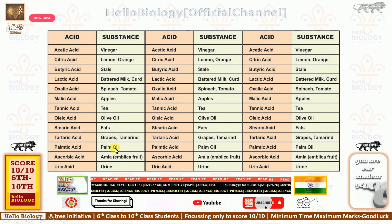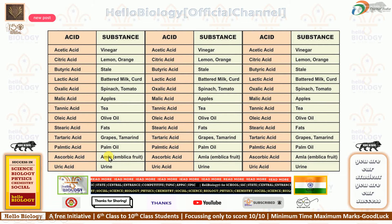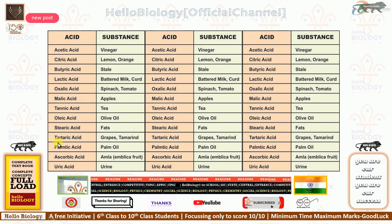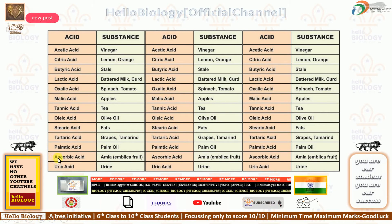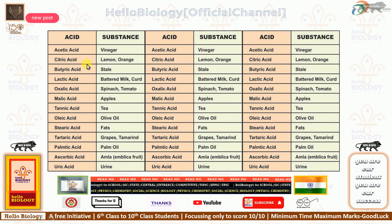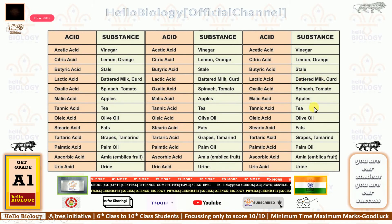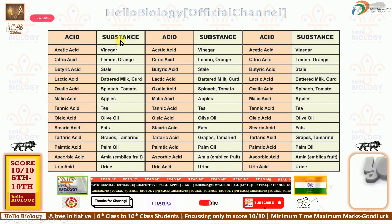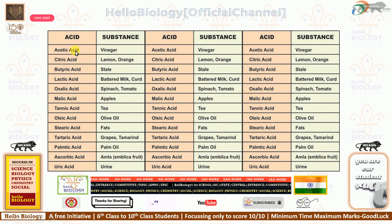Pumitic acid is present in palm oil. Ascorbic acid is present in amla. Uric acid is present in urine. For these last three, the first letter of the acid matches the first letter of the substance. This completes the full tabular column of acid versus substance.